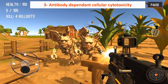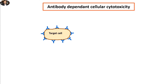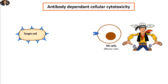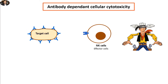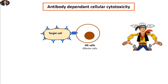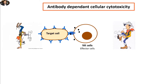Thirdly, antibody-dependent cellular toxicity. Antibodies attack antigens on the surfaces of the targeted cells. The FC part of the antibodies binds to specific receptors on the natural killer cells. The natural killers do not phagocytose the antigen-antibody complex, but instead they release a group of perforating enzymes which ultimately destroy the target cells.